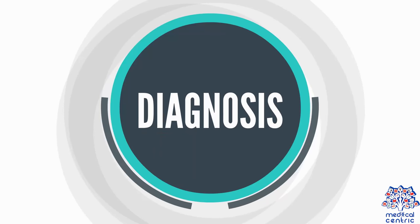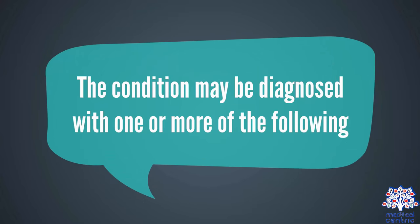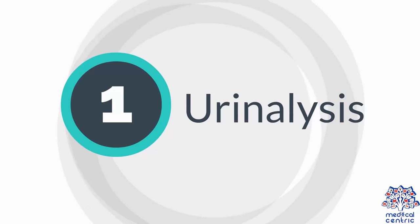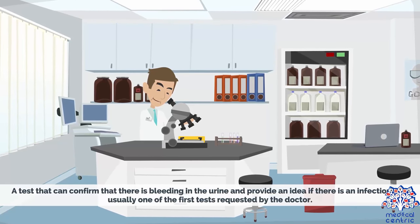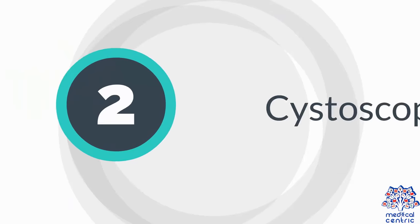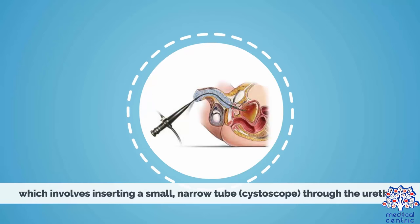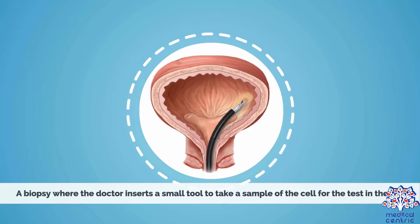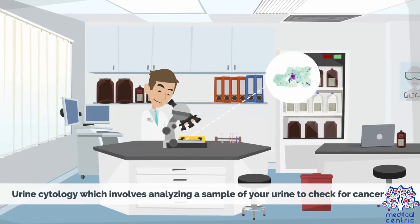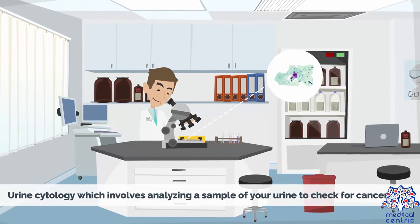Diagnosis and treatment. The condition may be diagnosed with one or more of the following. Urinalysis: a test that can confirm bleeding in the urine and provide an idea if there is an infection — usually one of the first tests requested by the doctor. Cystoscopy, which involves inserting a small, narrow tube or cystoscope through the urethra; the lens of the cystoscope allows the doctor to see the inside of the urethra and bladder to examine them for signs of disease. A biopsy, where the doctor inserts a small tool to take a sample of cells for testing in the lab. Urine cytology, which involves analyzing a sample of urine to check for cancer cells.